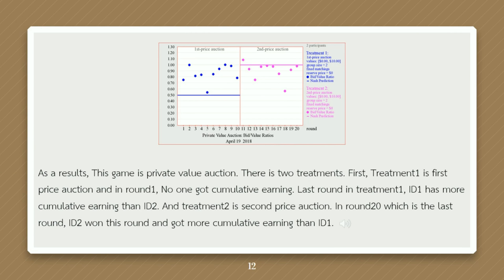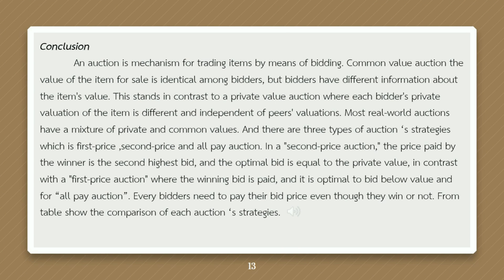As a result, this is a private value auction with two treatments. Treatment one is a first price auction — in round one, no one got cumulative earnings, and in the last round ID 1 has more cumulative earnings than ID 2. Treatment two is a second price auction — in round 20, the last round, ID 2 won and got more cumulative earnings than ID 1.